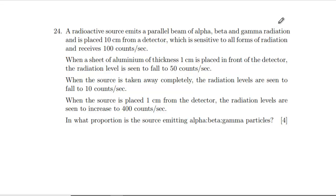Right, where are we now? Radioactive source emits a parallel beam of alpha, beta and gamma radiation placed 10 cm from a detector which is sensitive to all forms of radiation, receives 100 counts per second. Is this detector in air? It doesn't say. When a sheet of aluminum of thickness 1 cm is placed in front of the detector, the radiation level falls to 50. When the source is taken away completely, the radiation - okay, so that's telling us that the background equals 10.